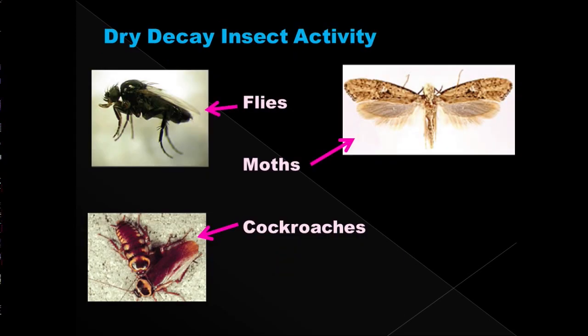Here we see insects expected on a body in the dry state of decomposition: flies like the coffin fly, moths like the clothes moth, and cockroaches of varying types. That concludes part two of our estimating the post-mortem interval series.